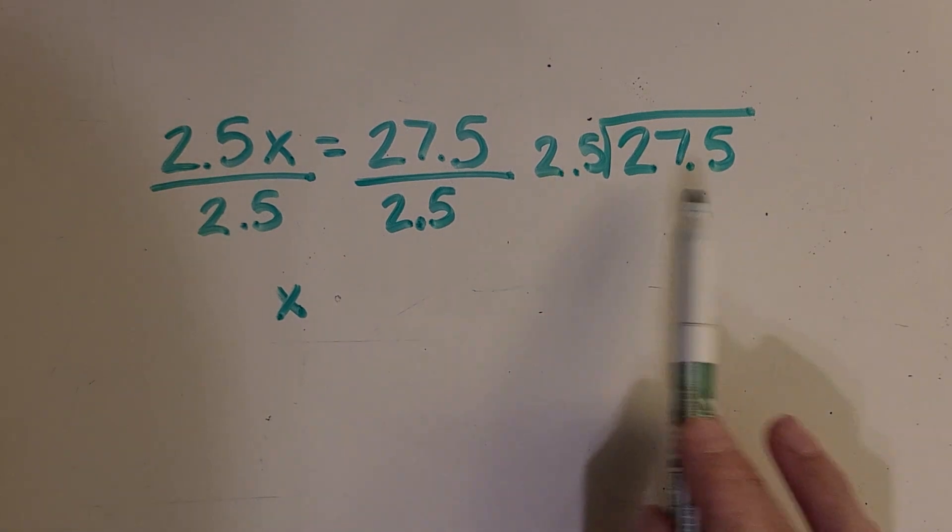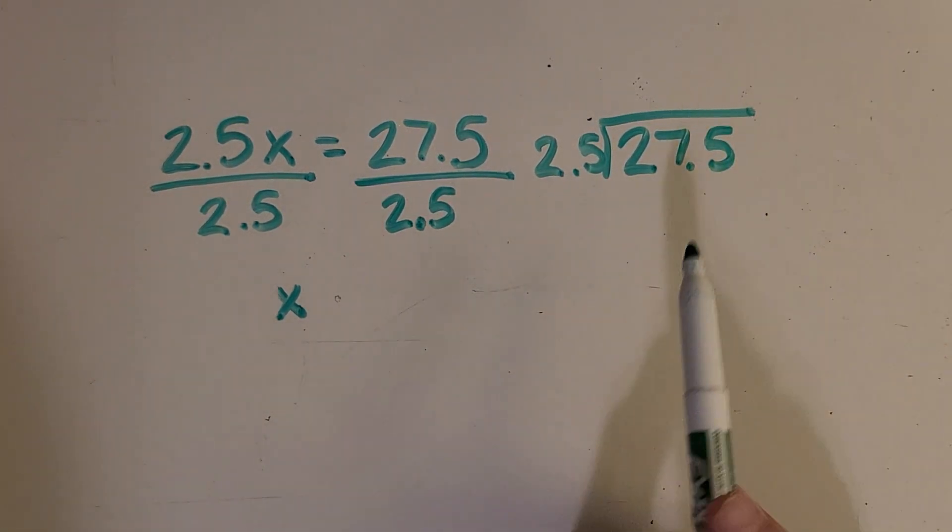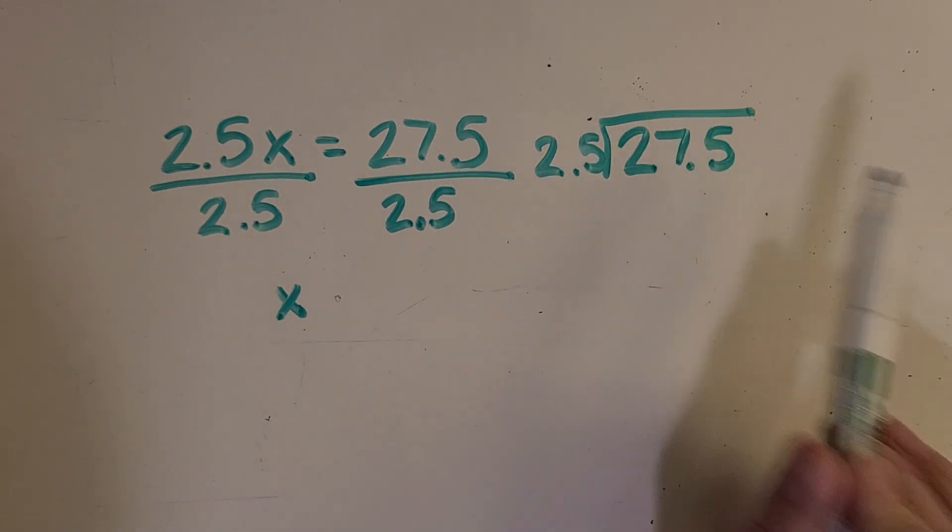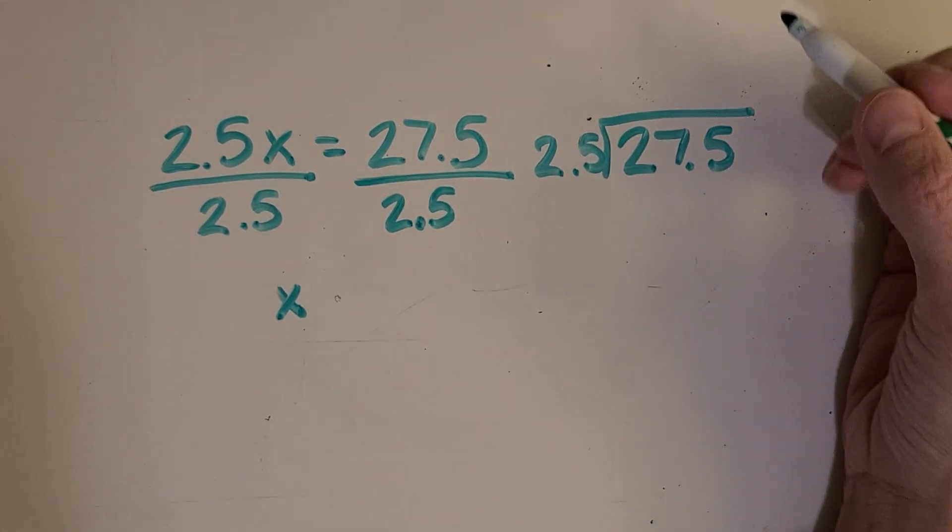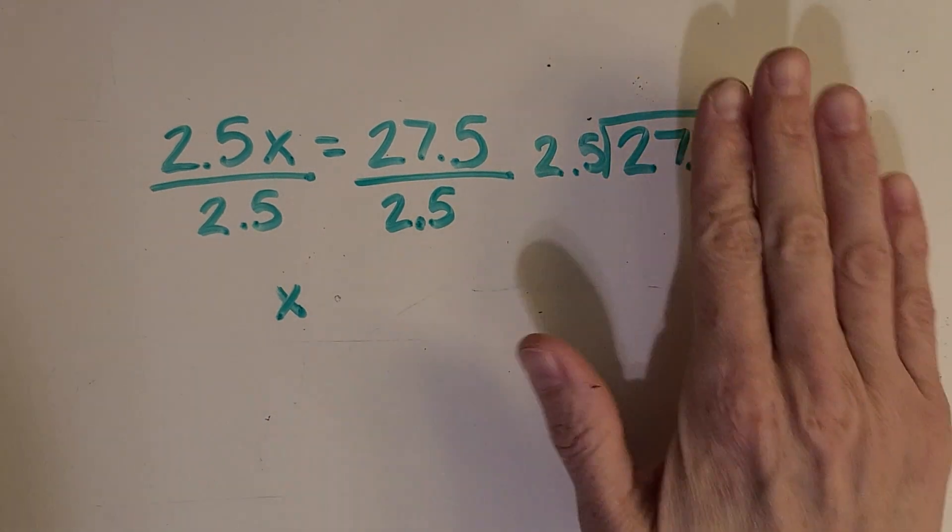So to get started, I'm going to ignore the decimal points for now, and I'm just going to be thinking about 25 and 275. So if I take a look,